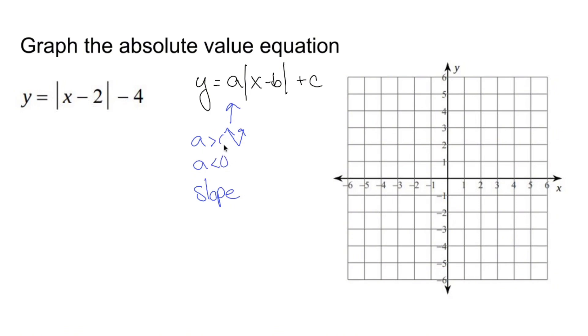B tells you where to move left or right depending on if it's positive or negative, and c tells you where to move up or down. So when I look at this, I have an invisible one living in front of my absolute value.